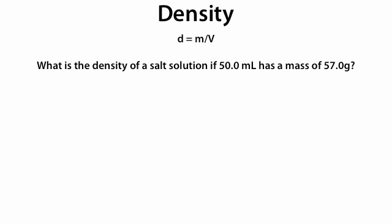What is the density of a salt solution if 50.0 milliliters has a mass of 57.0 grams? We've said that density is mass divided by volume. So we're going to take our mass of 57.0 grams and divide it by 50.0 milliliters. Doing some quick math, we get that density is equal to 1.14 grams per milliliter. We use units of grams per milliliter for our density because we've divided grams by milliliters.